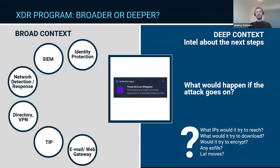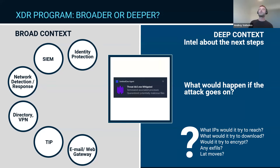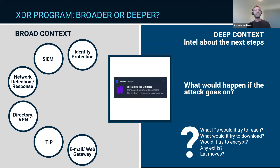Since this is the webinar about Sentinel-1, I will use screenshots from Sentinel-1. Let's speak a little bit broader and more general. Suppose you have this XDR program in place and you have insight on the endpoint. Some threat was found and mitigated, and the report says everything is okay. What are the typical next steps for your XDR program?